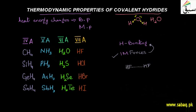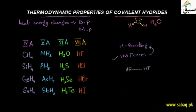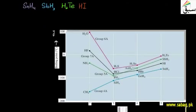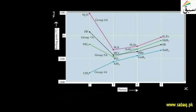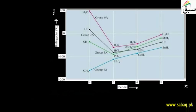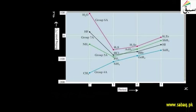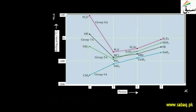If we look at the properties using a graph, we have the X-axis showing different periods and groups, and the Y-axis showing the boiling point trend of covalent hydrides.